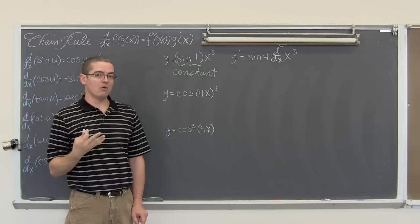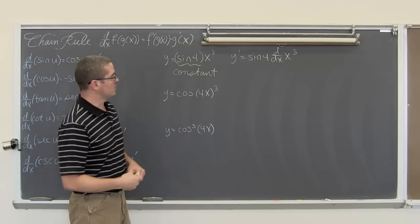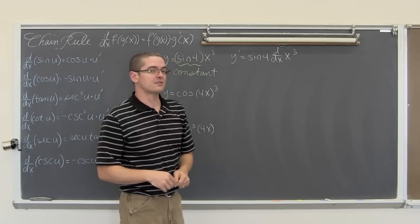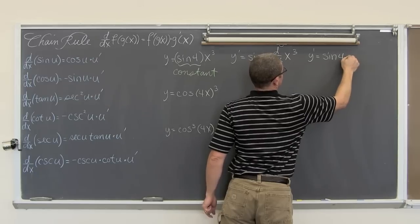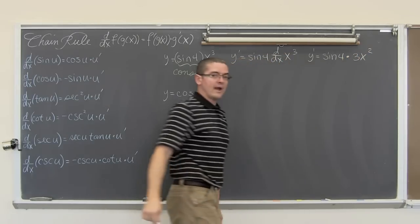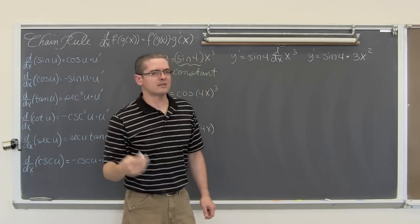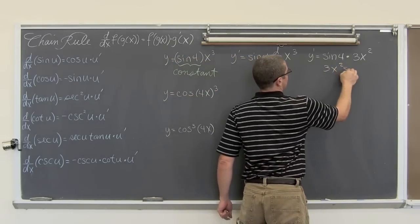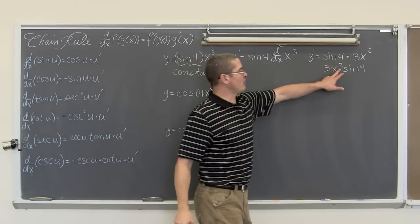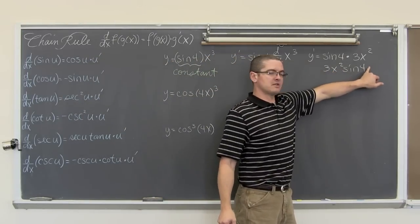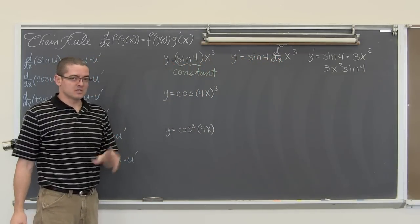So we are not really doing the chain rule here. We are just recognizing that sine of 4 is a constant and not getting confused because it is in the section on chain rule. We apply the constant times a function rule: y prime equals sine of 4 times the derivative with respect to x of x to the third, which gives y prime equals sine of 4 times 3x squared, or equivalently 3 sine of 4 times x squared.